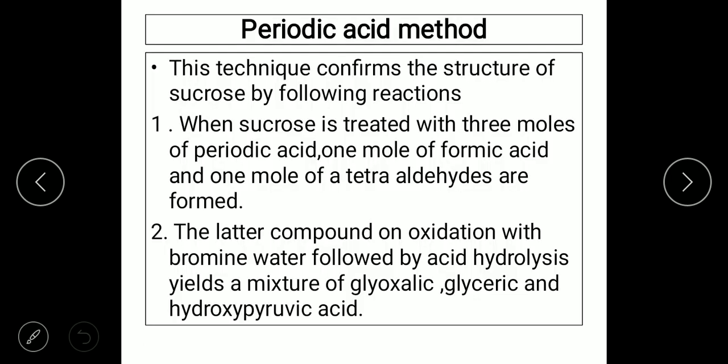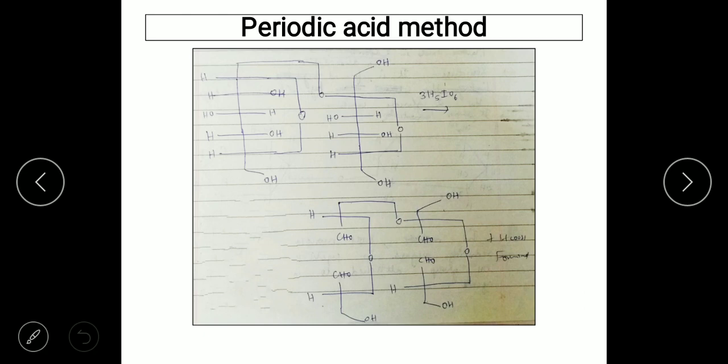The next evidence to confirm the structure of sucrose is the periodic acid method. When sucrose is treated with three moles of periodic acid, one mole of formic acid and one mole of tetra aldehyde are formed. The molecular formula of periodic acid is H₅IO₆, also written as HIO₄.